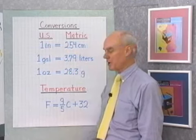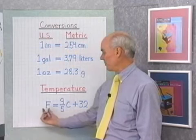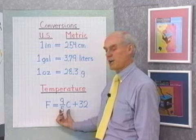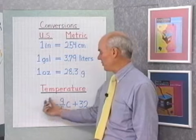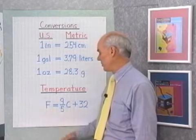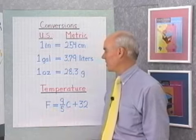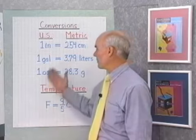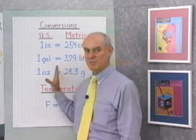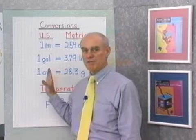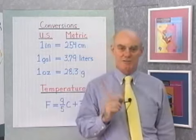Now, we're also going to do a little bit with temperature. You've seen this formula before: F equals 9 fifths C plus 32. We've used that formula before when we did the section on formulas. Let's go to the board now and see if we can take these basic conversion factors and do some converting between the two systems.